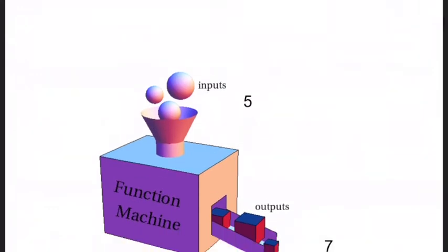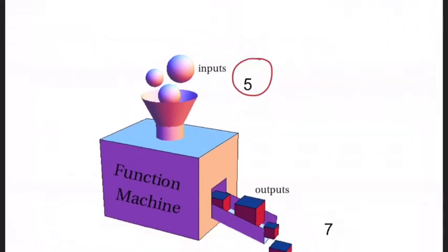Okay, so here's a function machine and basically what it means is this. When you put a number in, so if I put a number 5 in, what comes out is 7. So I have to figure out how did it go up. So this one obviously would be plus 2.